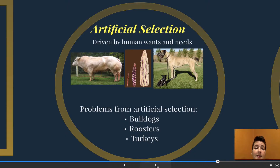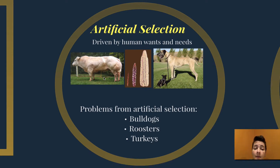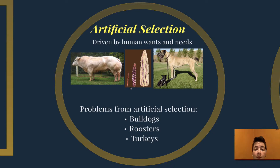Artificial selection is a means of driving evolution through human wants and needs. We have three examples here. First, a cow that is extremely muscular — the more muscular cows were chosen and allowed to reproduce, while less muscular ones were slaughtered before passing on their genes. The middle picture is corn: the first cob shown is what corn used to be before humans started working with it. We then started choosing cobs with more plump kernels, selecting again and again for more kernels per cob until we get to what we know today.